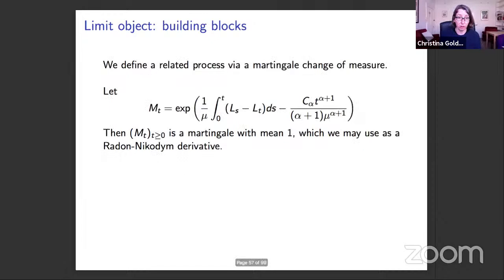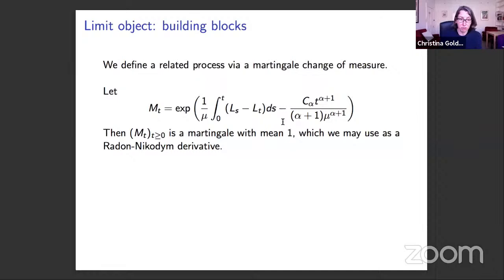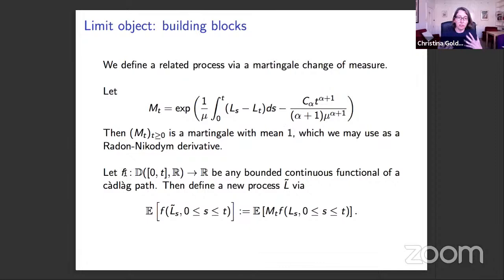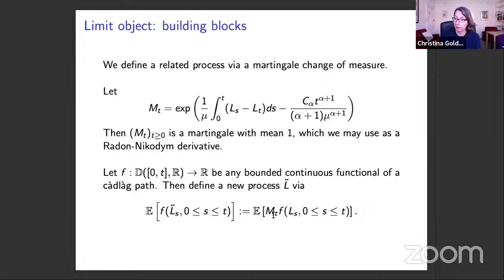We reweight the Lévy process measure via a martingale change of measure. Let M_T be this exponential functional of the Lévy process. It turns out to be a mean-one martingale, so we can use it as a Radon-Nikodym derivative to define a new measure. The expectation of any test function of the path of the new process L̃ up to time t is defined as the expectation under the Lévy measure weighted by M_T, giving a reweighting of the law of the process on compact time intervals.